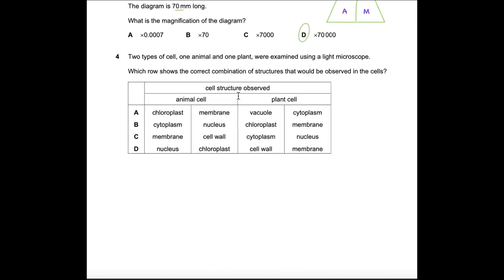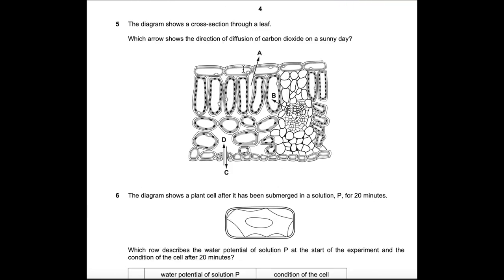Question 4: Two cell types — one animal, one plant — were examined using a light microscope. Option A shows chloroplasts in the animal cell, which is incorrect as chloroplasts are found in plant cells. Option B shows cytoplasm and nucleus in the animal cell, and chloroplast and membrane in the plant cell — that is correct. Options C and D are also incorrect as animal cells have no cell wall or chloroplasts. The answer is B.